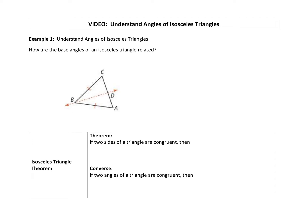The question we're being asked is: how are the base angles of an isosceles triangle related? Here's our isosceles triangle ABC, and you can see the two congruent sides. AB is congruent to BC, so this makes this an isosceles triangle.